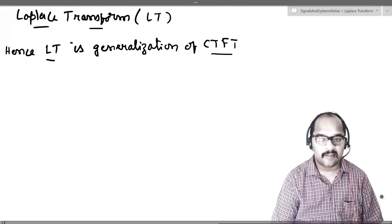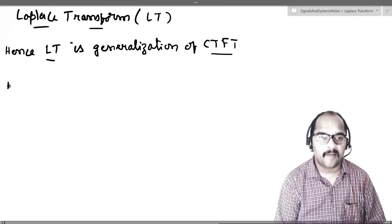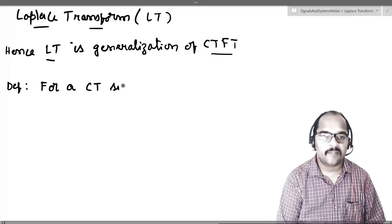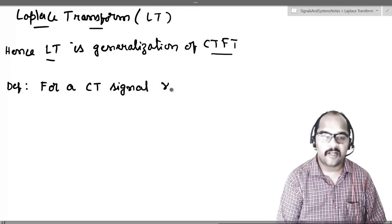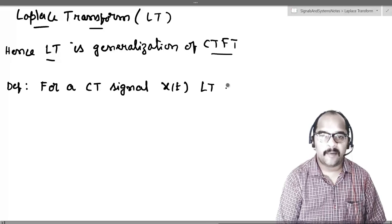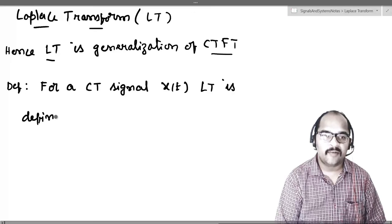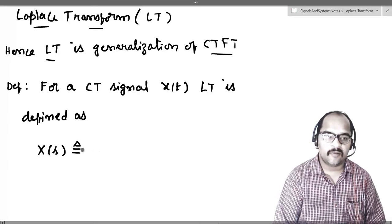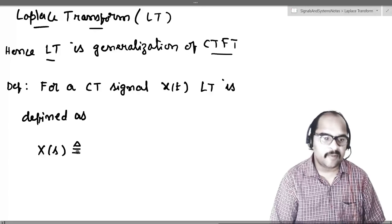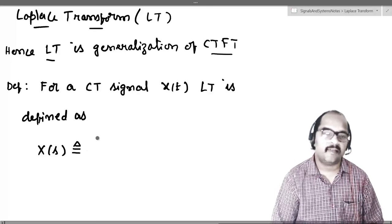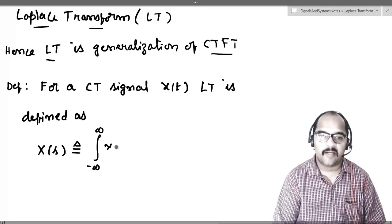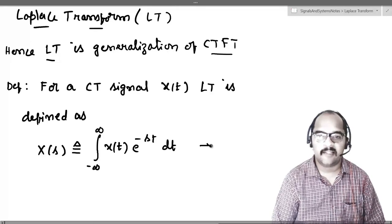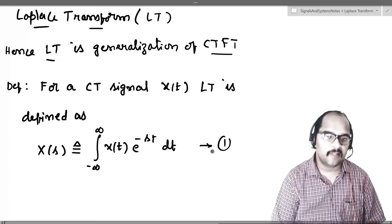With that brief motivation, let us directly jump into the concept of Laplace transform. First, we will write down the definition for a continuous time signal X of t. For a continuous time signal X of t, the Laplace transform is defined as X of s, equal to the integral from minus infinity to infinity of X of t multiplied with e power minus st dt. Let us call this equation 1.